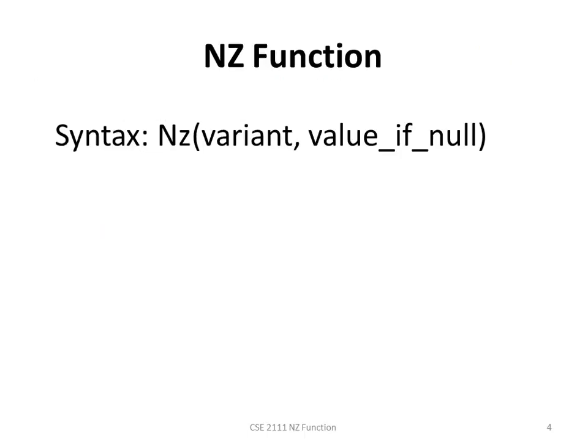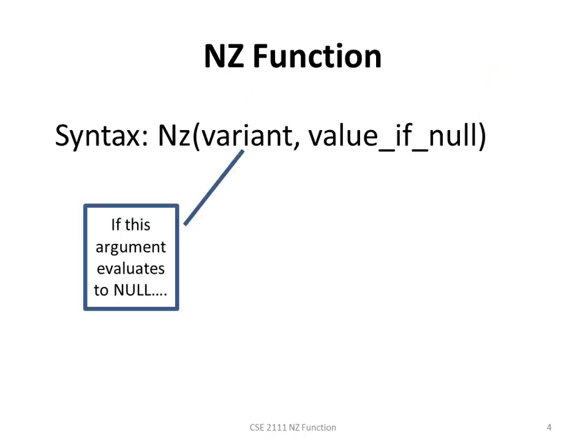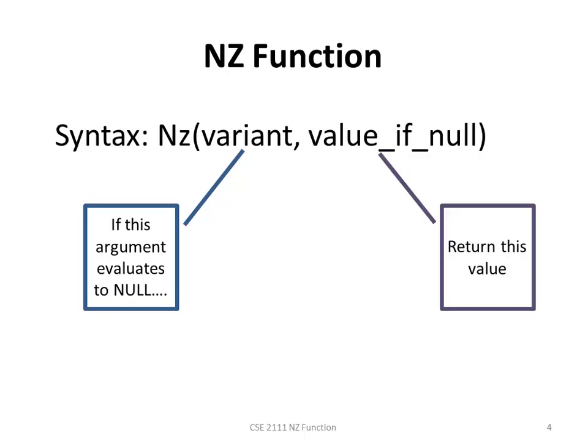How do we fix that? We fix that with a function called NZ. The function has two arguments and two arguments only: the variant, which is the field that you want to evaluate, and the value if null. So if the field evaluates to null, you will replace it with the value of your choice — in this case, we want to replace it with a zero. Now again, this will not replace the values in the table itself; it will only replace the value for calculation purposes.